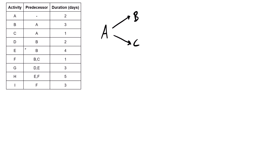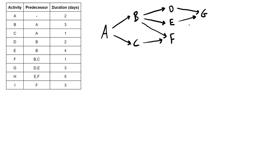Activity D depends on B, and activity E also depends on B. So D and E both depend on B, meaning two arrows come out of B — one going to D and the other to E. Activity F depends on both B and C, so one arrow comes from B and the other from C into F. Activity G depends on D and E, so both D and E lead into G. Activity H depends on E and F, so E and F both have to finish before H can start. Activity I depends only on activity F, so once F finishes, I can get going.